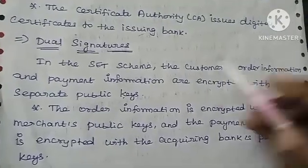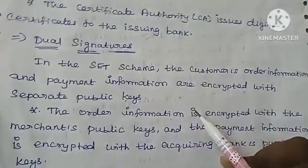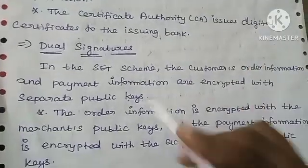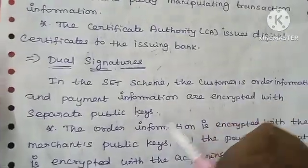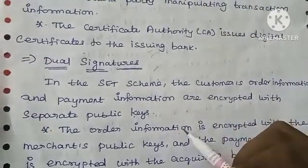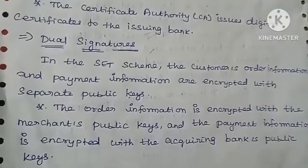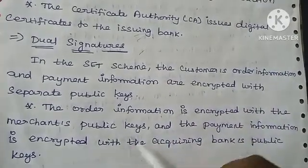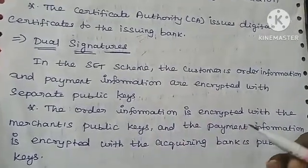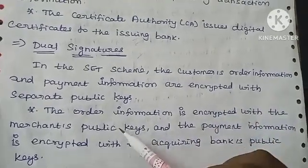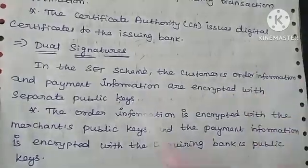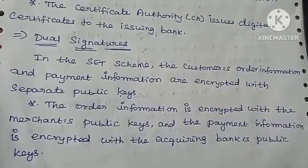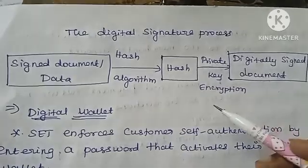The next component is the dual signature. In the SET scheme, the customer's order information and payment information are encrypted with separate public keys. One public key is used for the order information, which is sent to the merchant, and another public key is used for the payment information, which is sent to the bank. These are two separate encrypted channels.